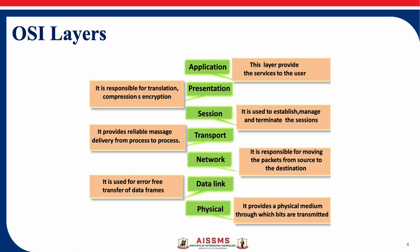The next is the network layer. The network layer has two main functions. One is breaking up segments into network packets and reassembling the packets on the receiving end. The other is routing packets by discovering the best path across a physical network. The network layer uses network addresses to route packets to a destination node.